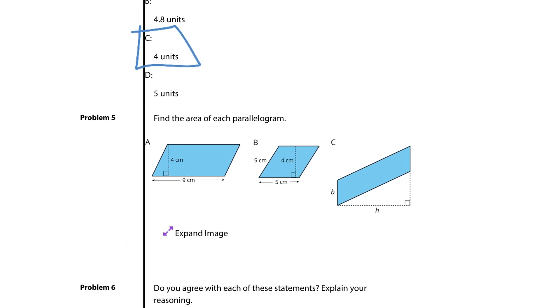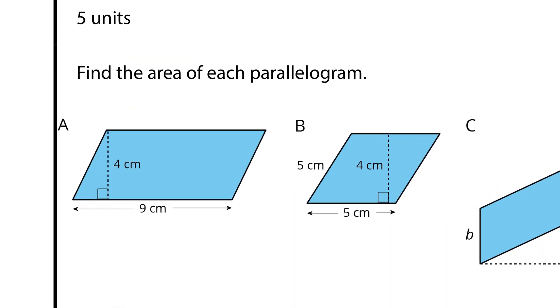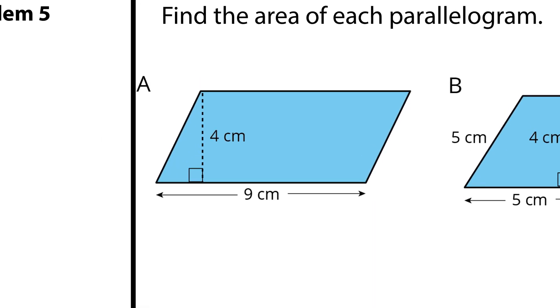Question 5 now. Find the area of each parallelogram. A. We have our base of 9, our height of 4. And so if I take 9 times 4, that's going to get me 36 square centimeters.